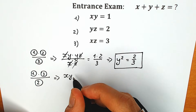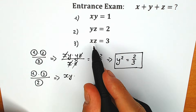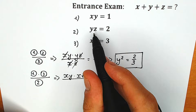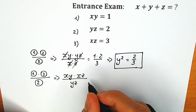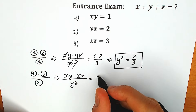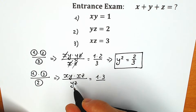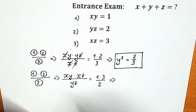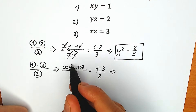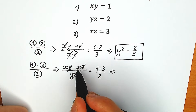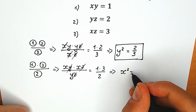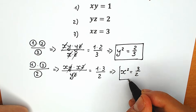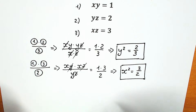First expression xy times the third one xz, and we divide it by the second expression yz. In terms of values: xy equals 1, xz equals 3, and we divide by yz equals 2. On the left side, we cancel y and y, z and z, leaving only x times x — x squared. On the right side we have 3/2. So x squared equals 3/2.